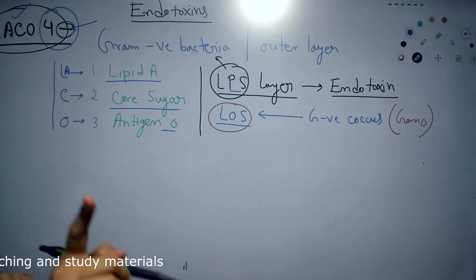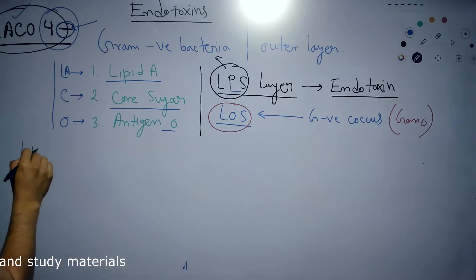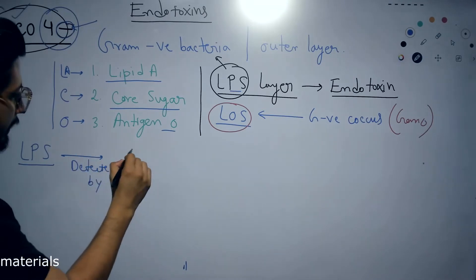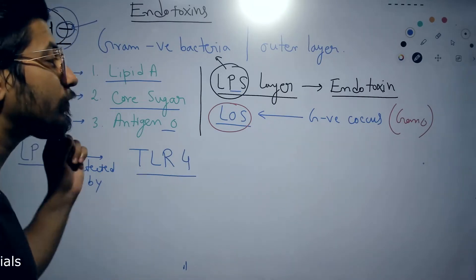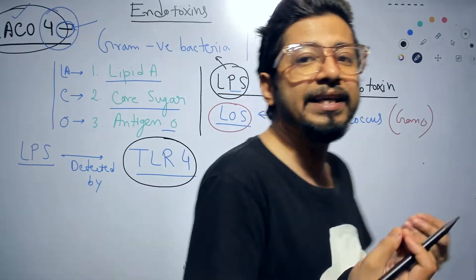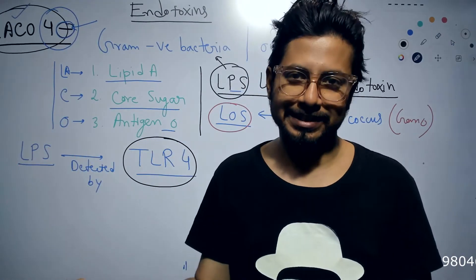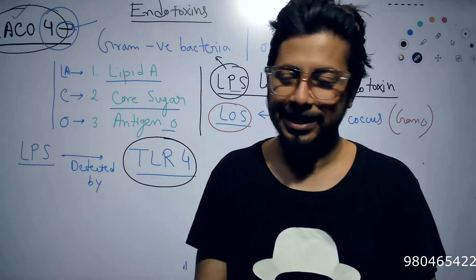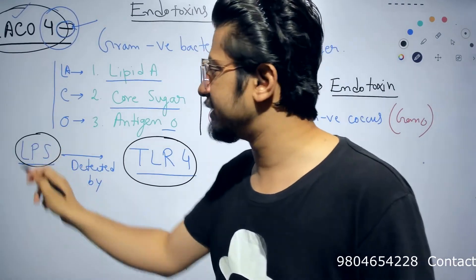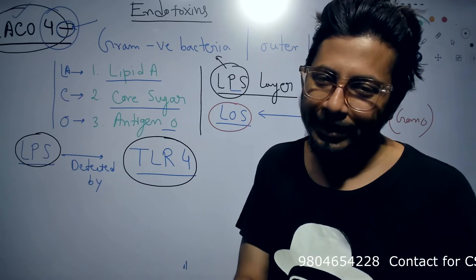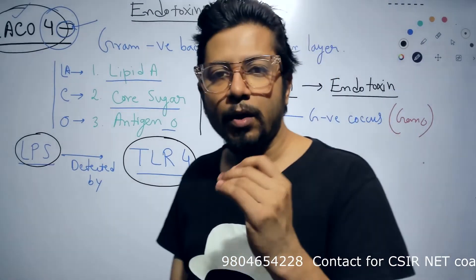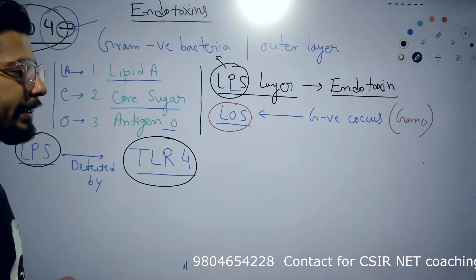The '4' in LACO4- refers to TLR4, Toll-like receptor 4. TLR4 is the specific receptor used by our immune system cells to detect the LPS antigen. There are different TLRs for different antigens — for example, other TLRs detect flagellin protein — but TLR4 specifically detects LPS. The minus sign indicates that LPS is predominantly found in gram-negative bacteria. That is why the mnemonic is LACO4-.